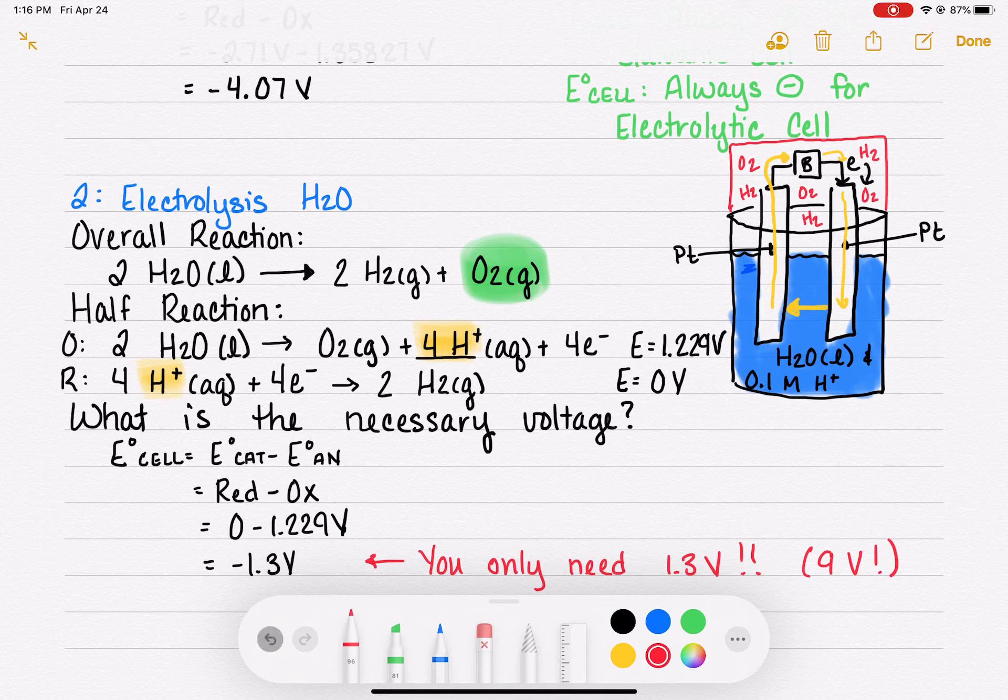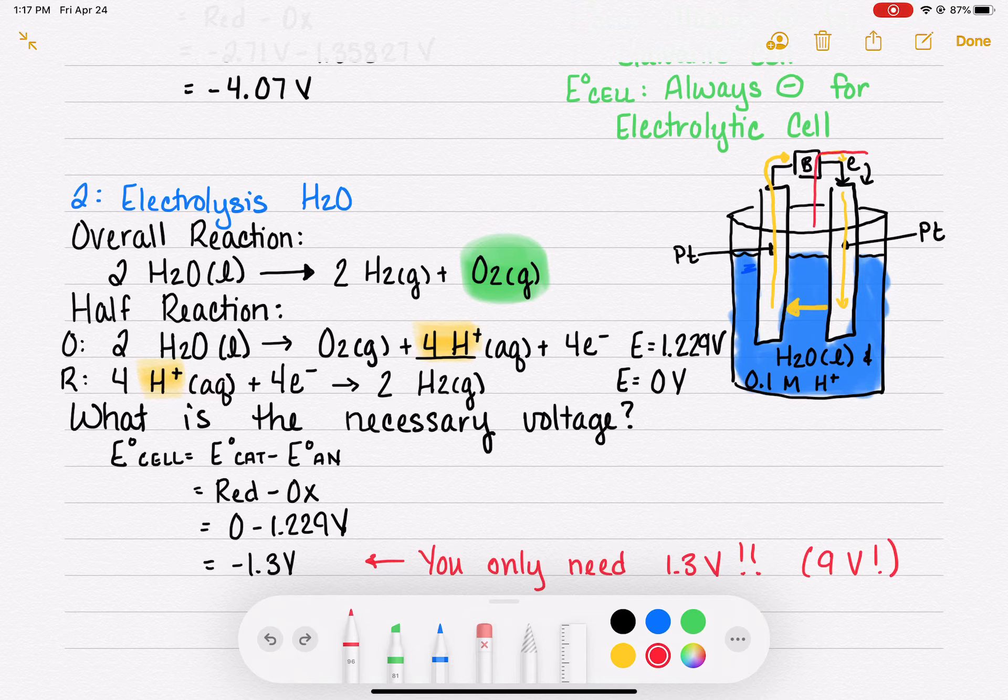As long as you don't mind getting a mixture of oxygen gas and hydrogen gas. What if you only wanted the oxygen gas, you didn't want any hydrogen gas in there? If you only wanted the oxygen gas then you would have to make a different type of enclosure, one that just enclosed maybe just this guy right here or one that enclosed just this guy right here.